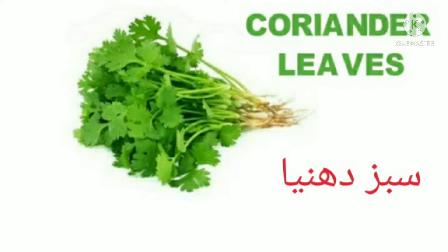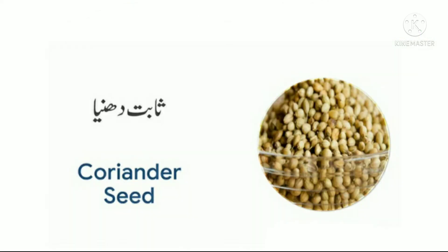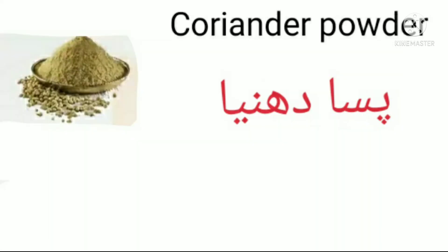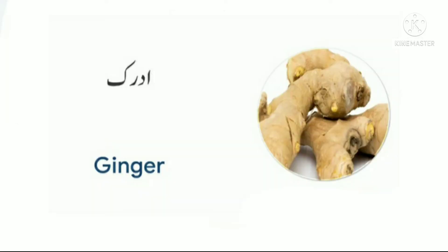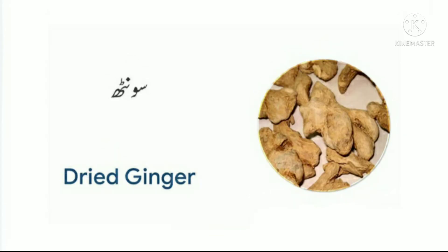Number thirty four: coriander leaves, sabz dhaniya. Number thirty five: coriander seed, sabat dhaniya. Number thirty six: coriander powder, pisa dhaniya. Number thirty seven: ginger, adrak. Number thirty eight: dried ginger, khushk adrak, sund.